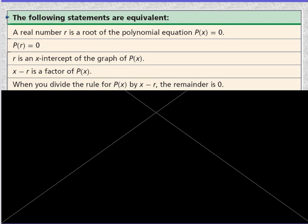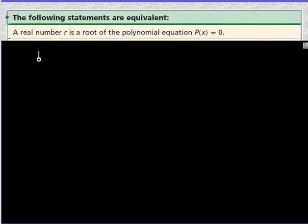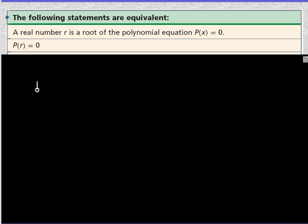All right, so the following statements are equivalent. This is probably more than you need to know, but it's probably just additional information to know about polynomials. So a real number r is a root of the polynomial equation P(x) equals 0, P(r) equals 0. So it's telling you these are all equivalent statements. So a real number r is a root of polynomial equation P(x) equals 0. That means when you evaluate P, the polynomial, at the value r, it equals 0.